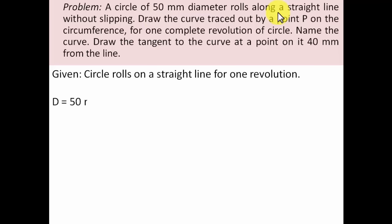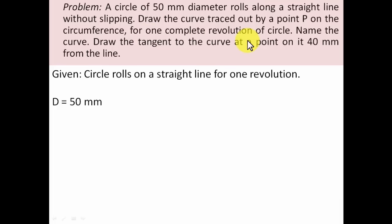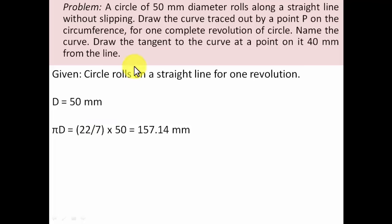We have a circle with a diameter of 50 millimeters, and it rolls along a straight line. We need to track one point which lies on the circumference. The definition of a cycloid is a curve generated by any point P on the circumference of a circle when it rolls along a straight line — so the name of the curve is obviously a cycloid. With D = 50 mm, the horizontal distance traveled for one complete revolution is πD, giving approximately 157.14 millimeters.